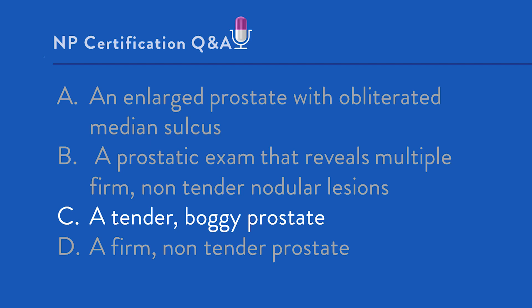Option D — a firm, non-tender prostate — is incorrect because option C is our correct answer. This could simply represent a normal prostate exam. Key takeaway: knowledge of the most common results of the physical exam for a given diagnosis is at the core of clinical practice and certification success.